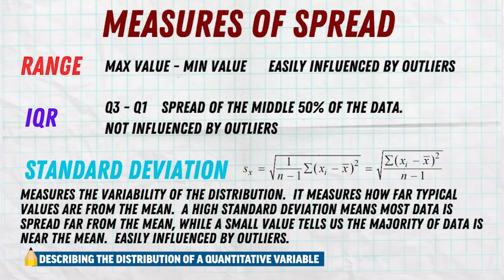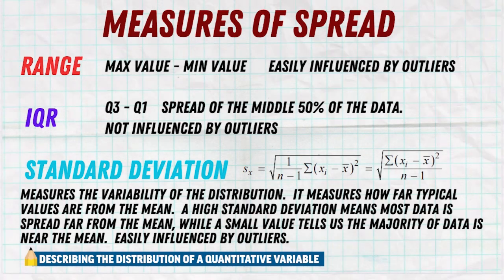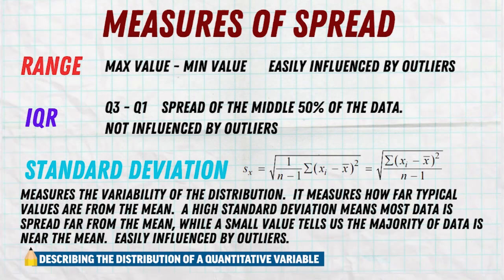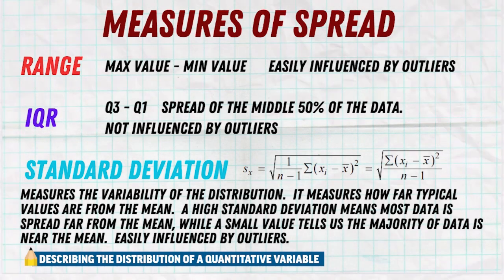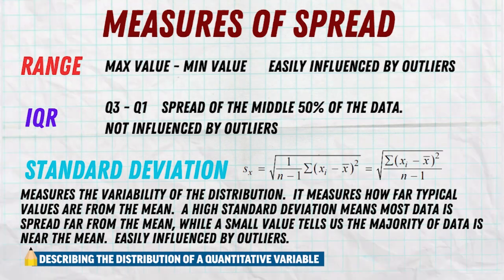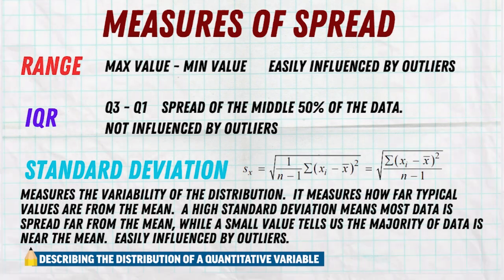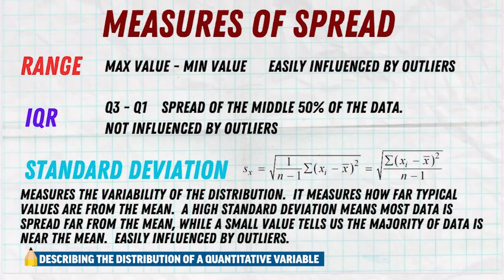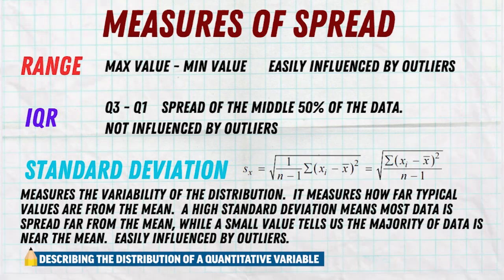Lastly, we have probably the most common and most famous measure of spread: the standard deviation. The standard deviation has a pretty complicated formula, but you're always going to use technology to find it or you'll be given it. What's more important is knowing what it represents — it represents how far the majority of data is from the mean. A very large standard deviation means most data is very far from the mean, whether above or below. A very small standard deviation means most data is very close to the mean.